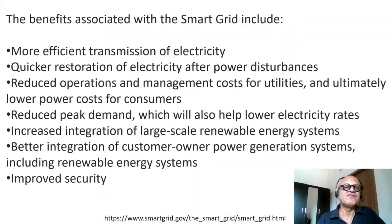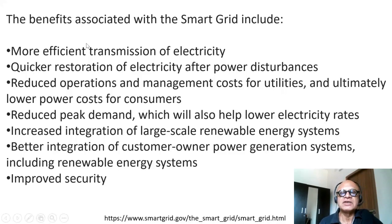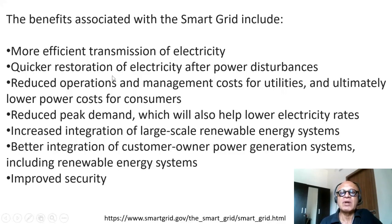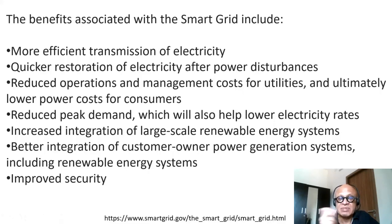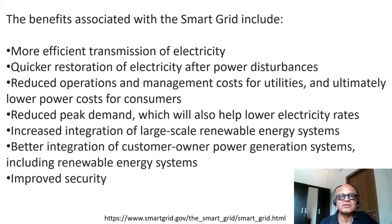From smartgrid.gov, benefits of smart grids include: more efficient transmission of electricity by managing bi-directional flow and supply and demand; quicker restoration after power disturbances, since parts of the grid can disconnect and reattach depending on where disturbances are propagating; reduced operations and management costs for utilities and ultimately lower power costs for consumers; and reduced peak demand by managing supply and demand to prevent spikes based on temperature increases or weather events.